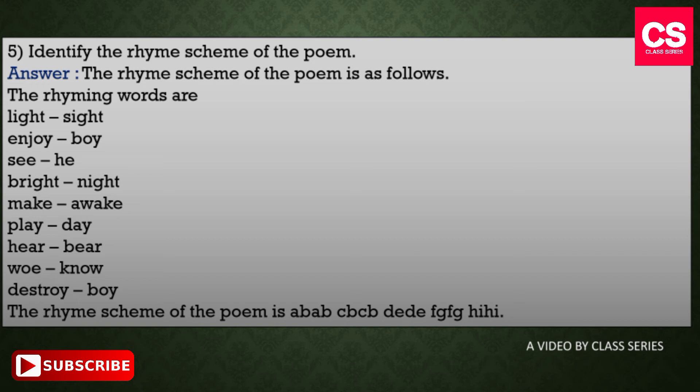The rhyme scheme of the poem is: a-b-a-b, c-b-c-b, c-b-d-e, d-e-f-g, f-g-h-i, h-i. This rhyme scheme is according to the paragraphs of the poem.